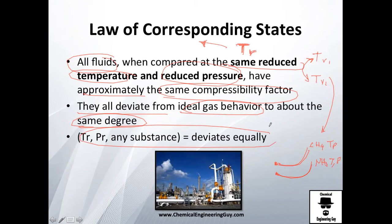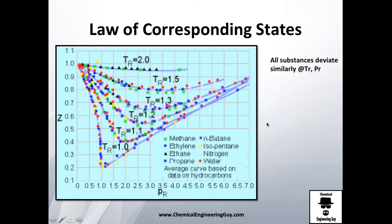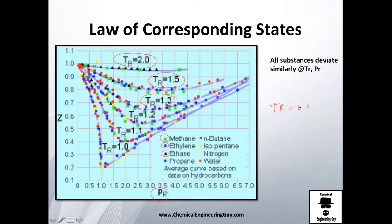That's a lot of theory — just get used to the idea that for any substance they use reduced temperatures. In the chart shown, the green one is methane, the blue one is ethylene, and the black one is ethane. When looking at reduced temperatures and reduced pressures, they all behave exactly the same. You take TR for methane and ethylene and they deviate exactly the same, or very very similarly.